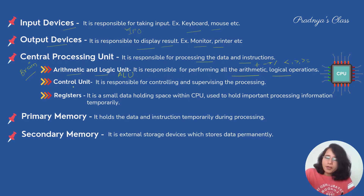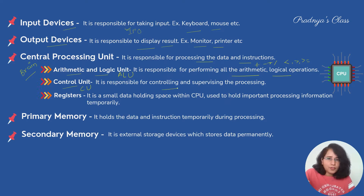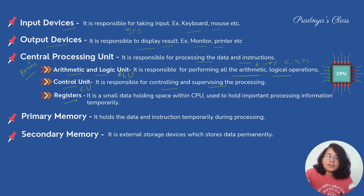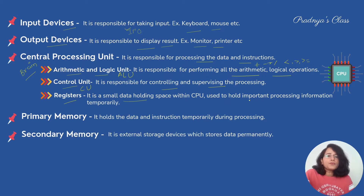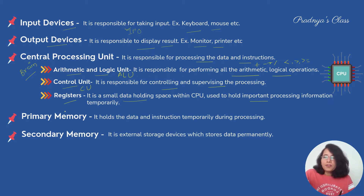The next part of the CPU is the Control Unit, CU. It is responsible for controlling and supervising the processing. The next part of the CPU are the registers — these are small data holding spaces within the CPU used to hold processing information temporarily.